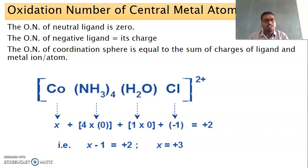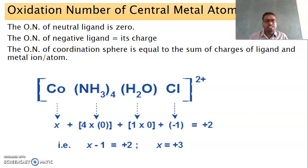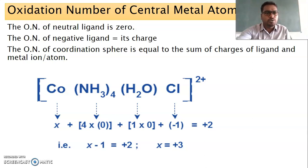One atom can possess two to three different oxidation states — this phenomenon is called variable oxidation state. The oxidation state of a central metal ion in a coordination complex decides important properties like magnetic behavior, colored compound formation, and catalytic nature. That's why we need to know how to calculate it.